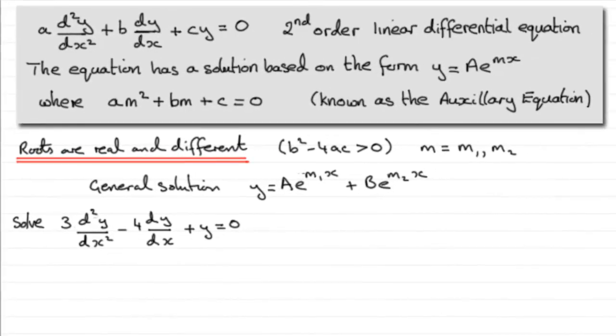Hi, now in an earlier video in this series I showed you that if we were given a second order linear differential equation, then if we worked out the auxiliary equation and found that the roots were real and different, those roots being m1 and m2, then the general solution was of the form y equals Ae to the power m1x plus Be to the power m2x.